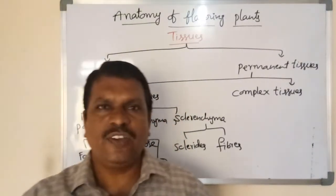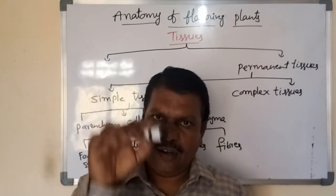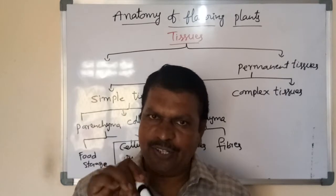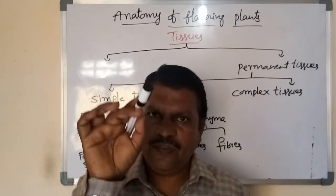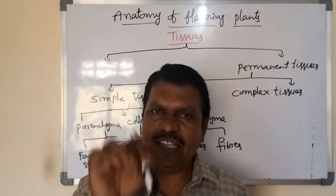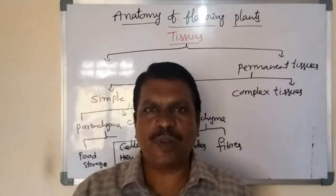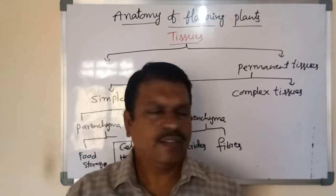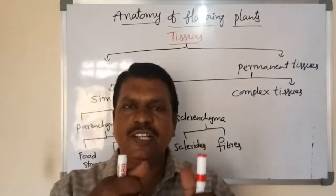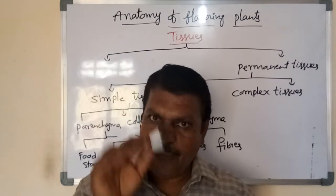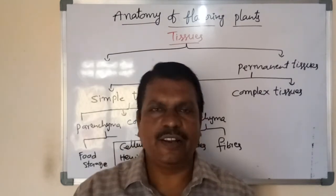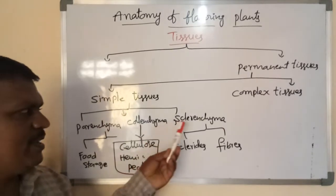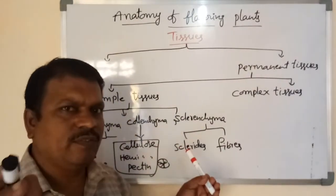Next: fibers. Fibers are highly elongated, long, narrow, slender tubular structures having tapering ends and an empty lumen. Lumen means empty space. Due to lack of protoplasm, they become dead. Their function is physical support — fibers provide physical support to the various parts of plants like the main stem, sub-branches, etc. That is about parenchyma, collenchyma, and sclerenchyma, their general characteristic features.